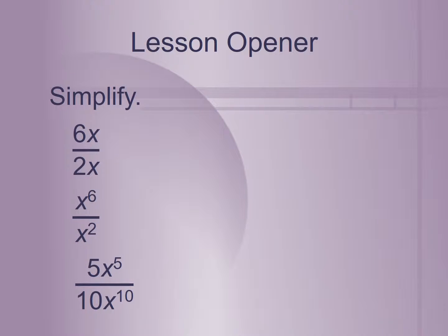Let's take a look at these three different expressions and simplify them. The first expression is 6x over 2x. 6 over 2 simplifies to 3, and x over x simplifies to 1. So our simplified answer is 3.